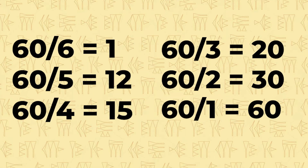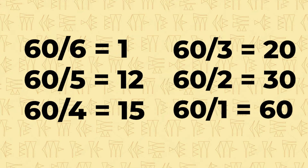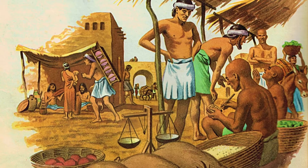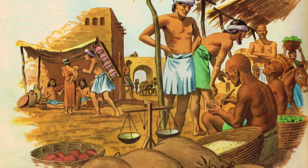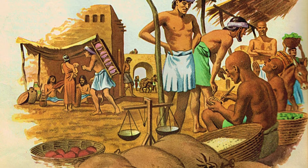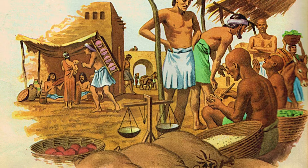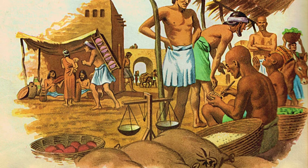The sexagesimal system was most likely adopted because 60 is the smallest number that is divisible by every number from 1 to 6. We still use the base-60 system for counting minutes and seconds, as well as our calculations of angles.